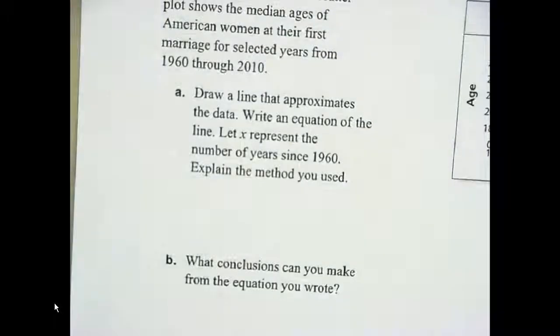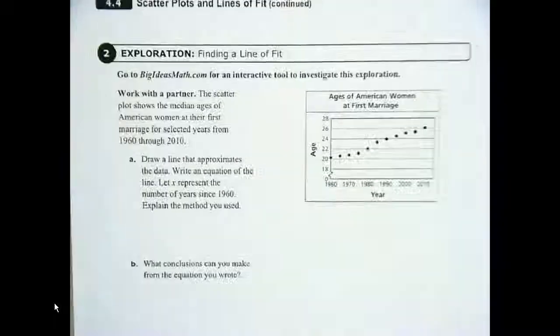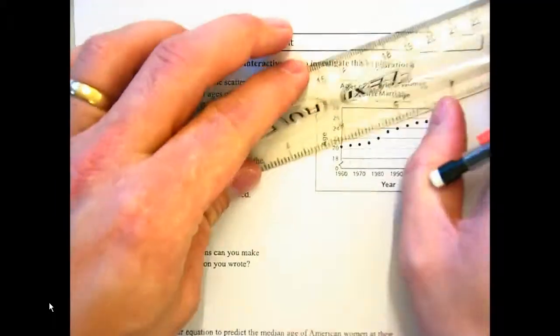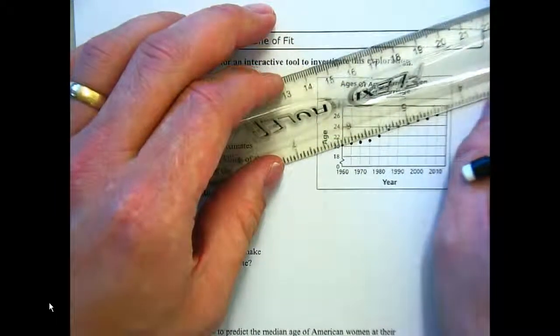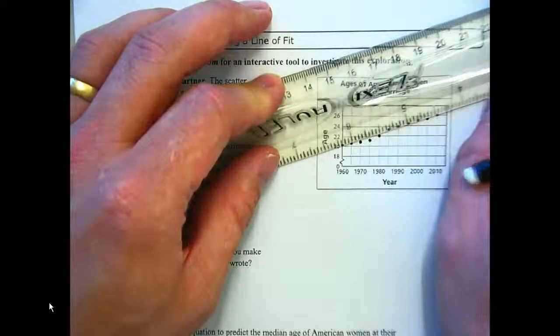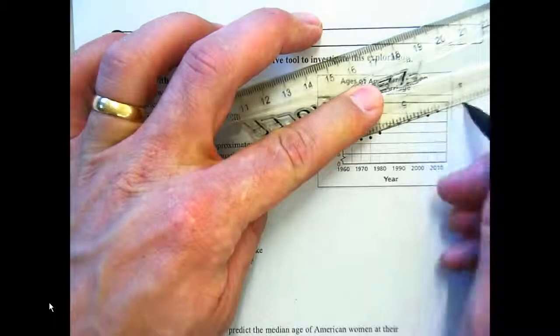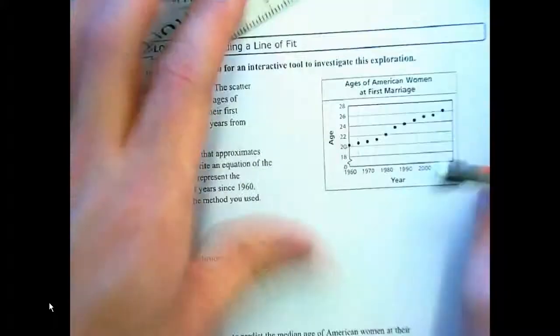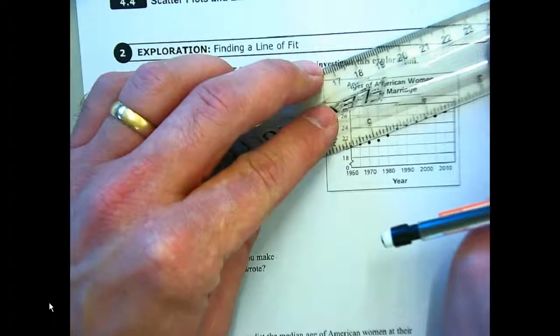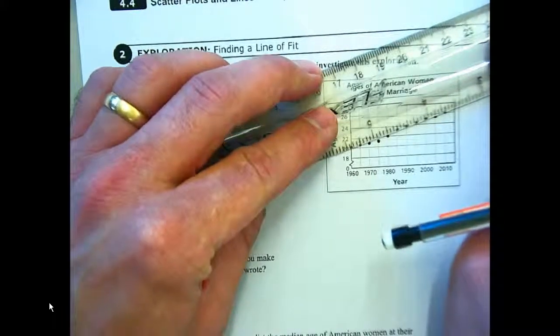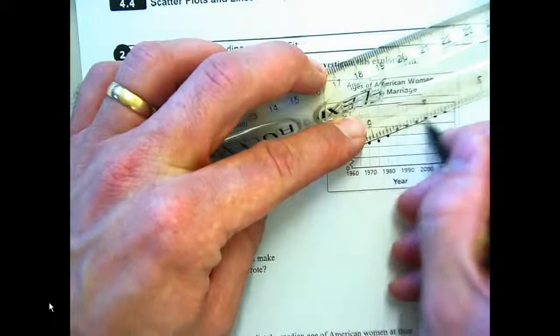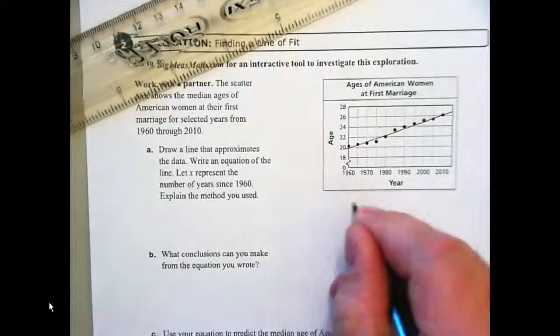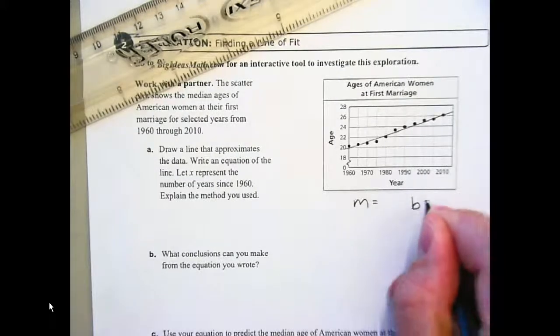Hey, why don't you take a look at example two, or exploration two. Go ahead and work with your groupies there. Make sure you stop me and ask me questions if you got them. Okay, ladies and gentlemen, if I could have your attention up here. So if I'm taking a look at my trend line, I think it's going to go... the ruler just slid. So I will try that again. It's kind of nice if you have a clear ruler, then you can kind of see what's going on.